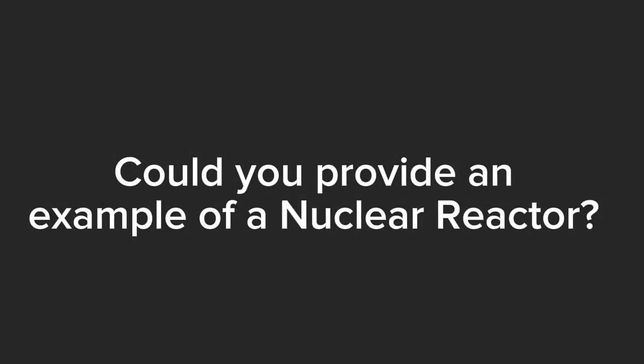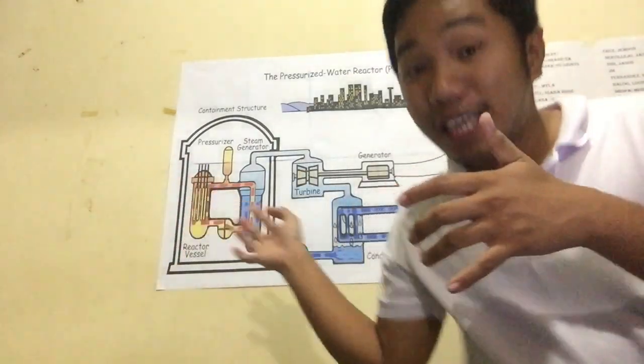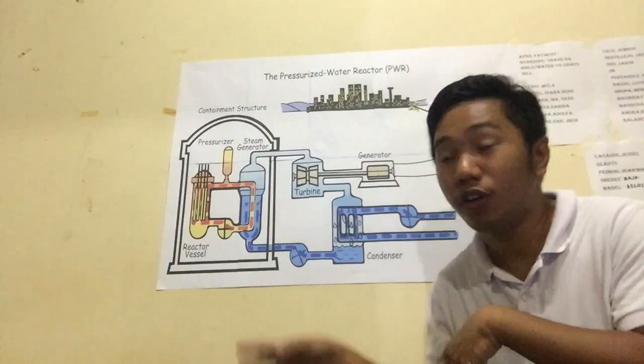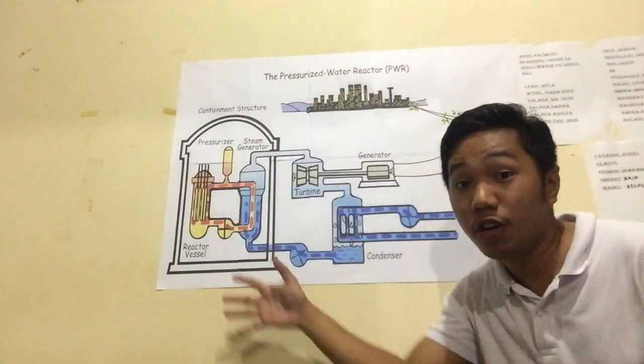After all of those questions, what is a nuclear reactor? A nuclear reactor is a complex machine designed to initiate and control a sustained nuclear chain reaction. One commonly used design is the pressurized water reactor, which is widely employed in the power industry. This is an example of a nuclear reactor — the pressurized water reactor.